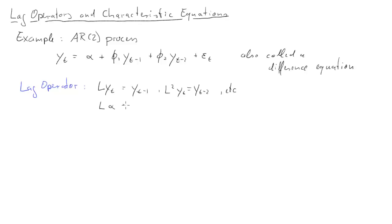Now if you have a lag operator times a constant, i.e. a coefficient, that just remains the constant. So that means we can restate the above process like this. All we've done is we've replaced Y_t minus 1 with LY_t and Y_t minus 2 with L squared Y_t.